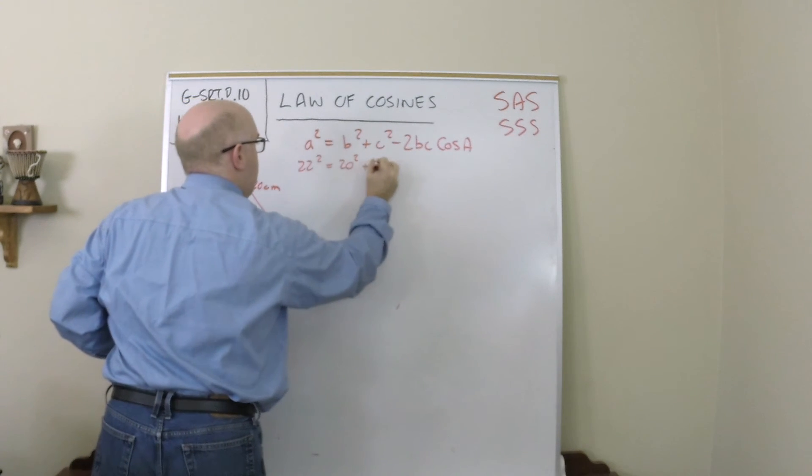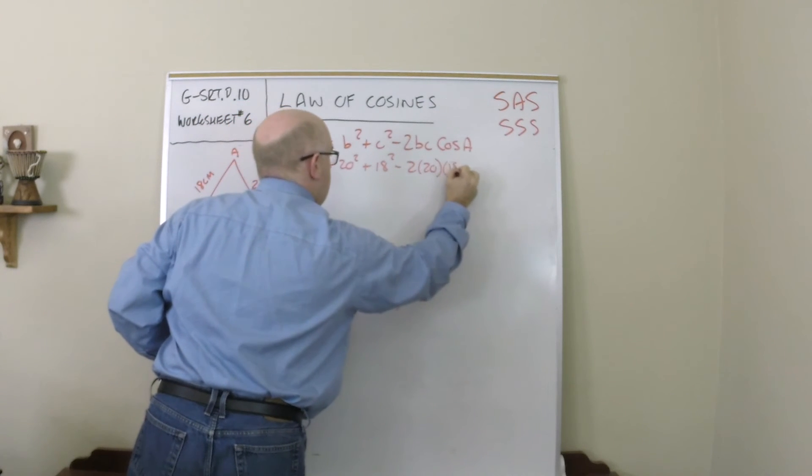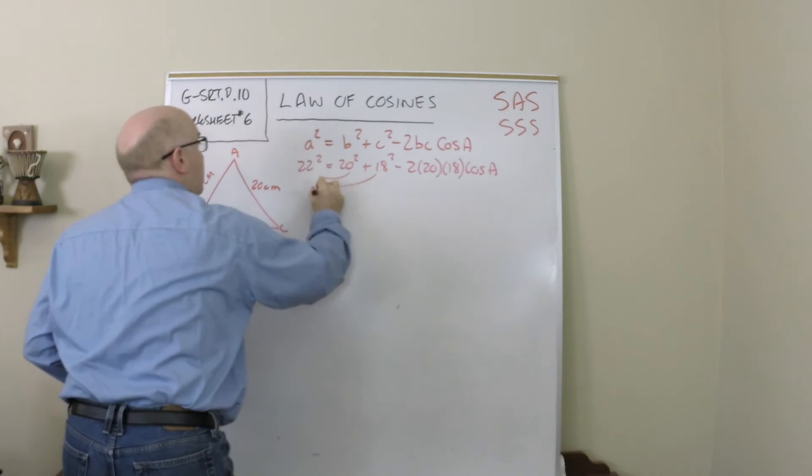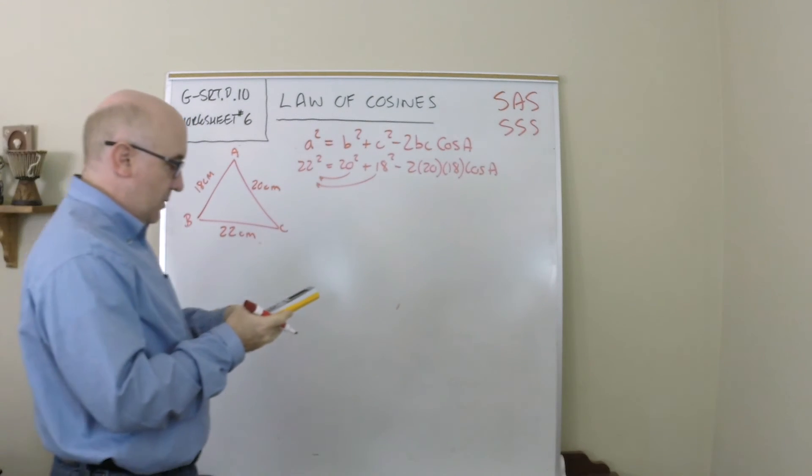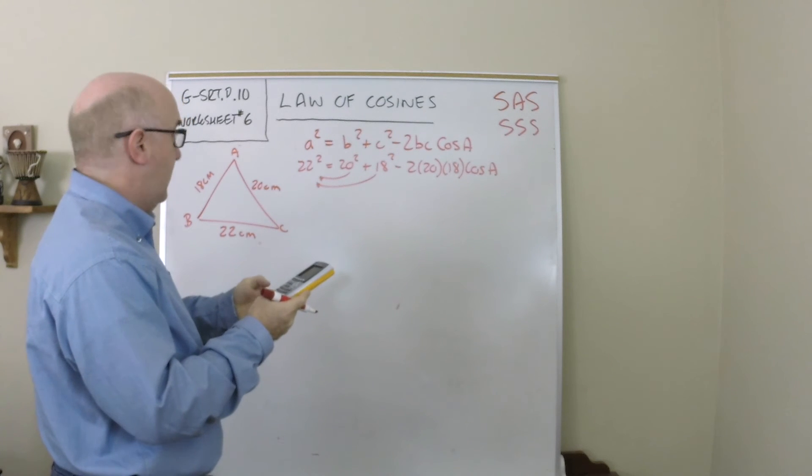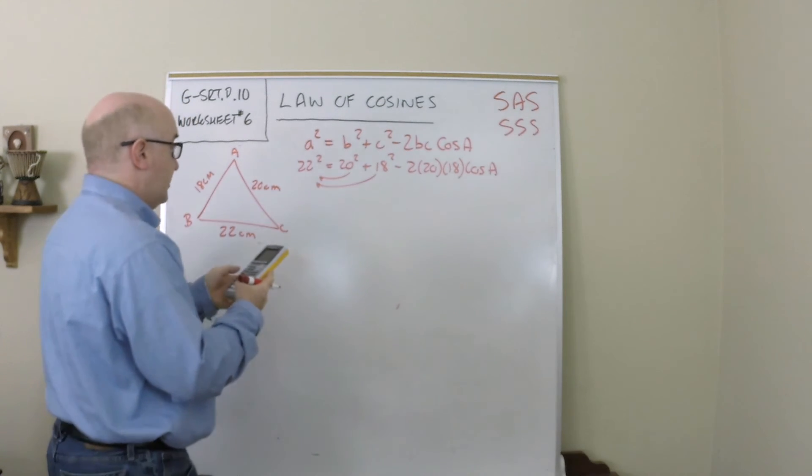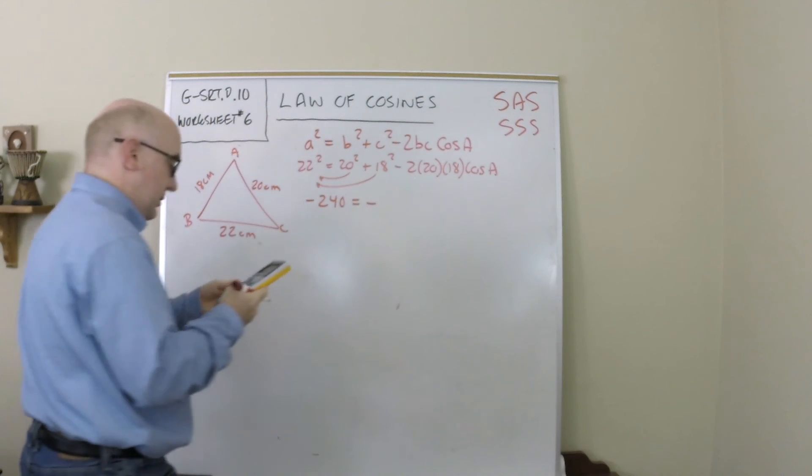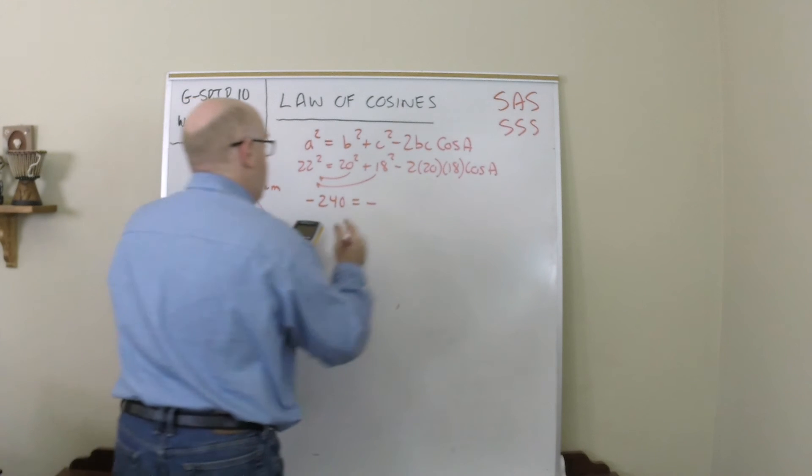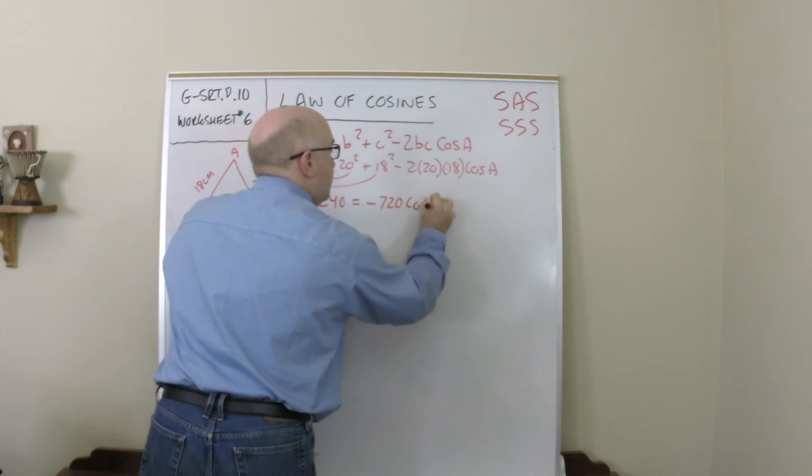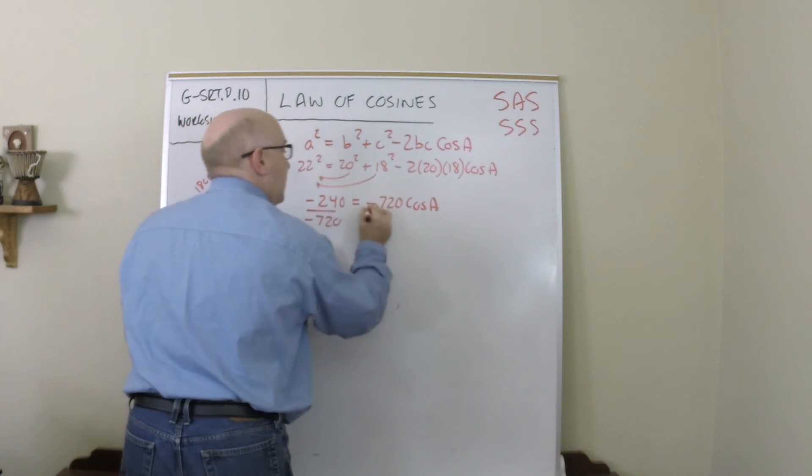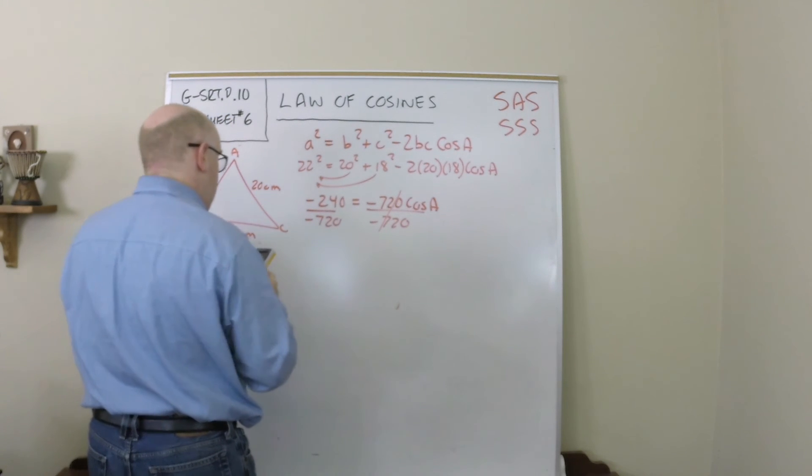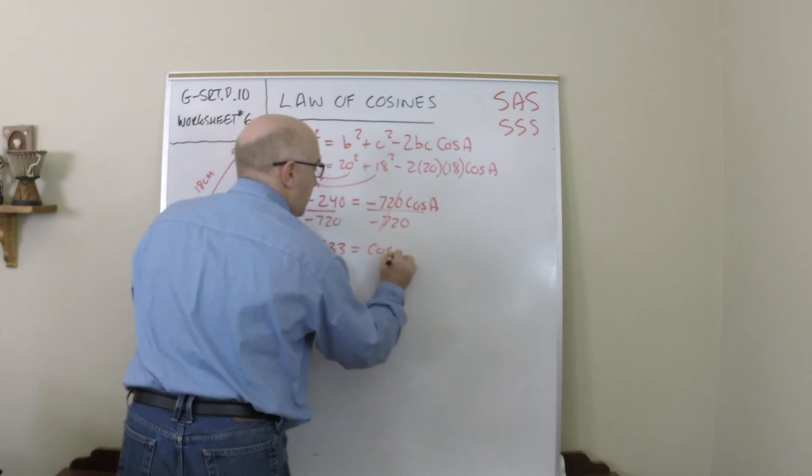And in goes the information: 22, 20, 18, 20, 18 cos of A. I'm going to move this over, so 22 squared minus 20 squared minus 18 squared gives me negative 240 equals negative, I'm going to multiply this together, so that's negative 2 times 20 times 18, that's negative 720 cos of A. Divide both sides by negative 720, and I get 240 divided by 720, I get 0.333 equals the cos of A.